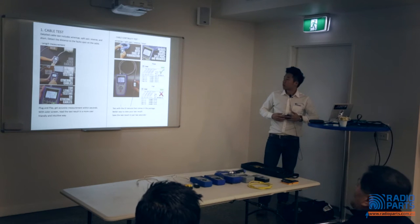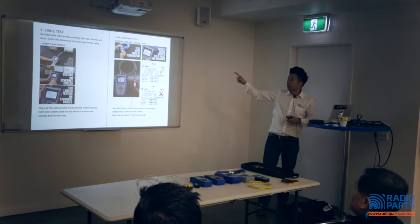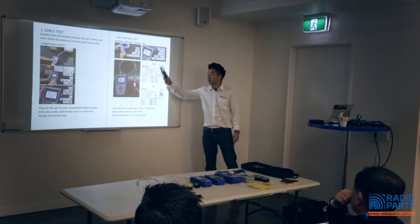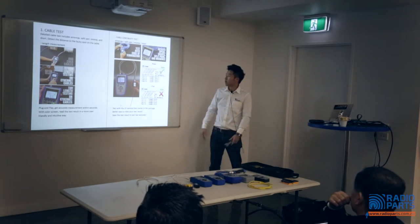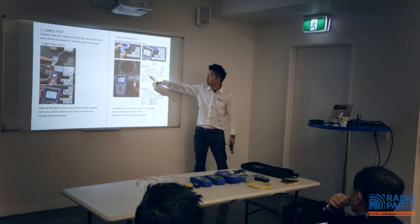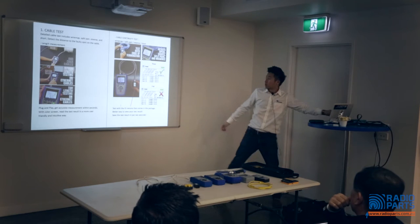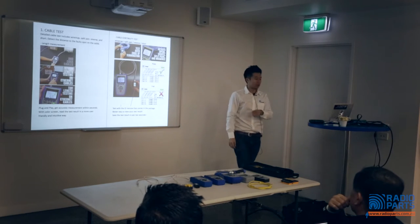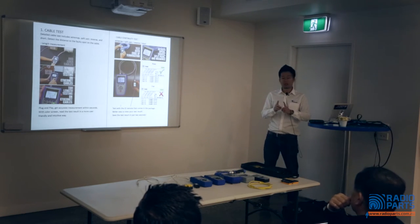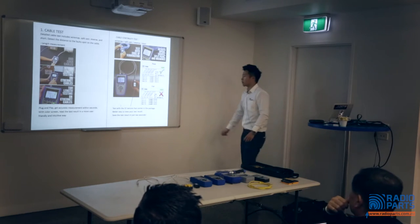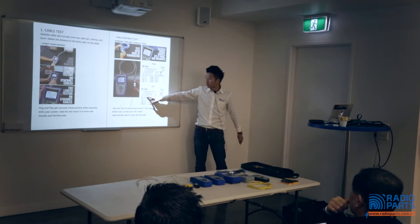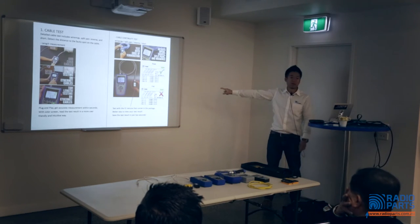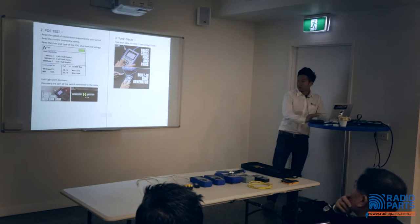For cable testing you can test coaxial cable, network cable, Cat 5, Cat 6, Cat 6a cable. Here is the result of cable testing — you can get a pass or a fail. It gives you what we call the wire map: the status of each pair inside the ethernet cable and the length of each pair. The lengths may differ slightly because the cable is twisted. If you get a fail the device shows you the status — whether there's a short, open, reverse, or split.